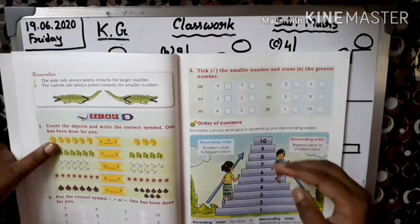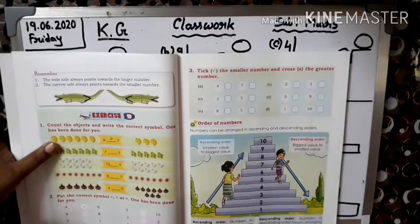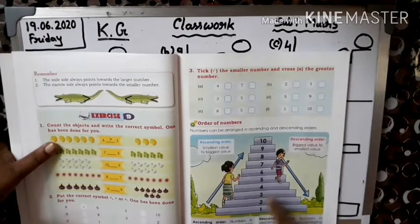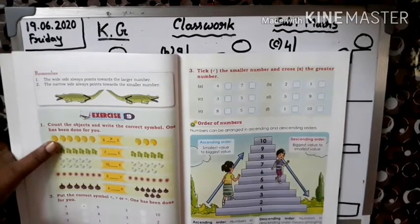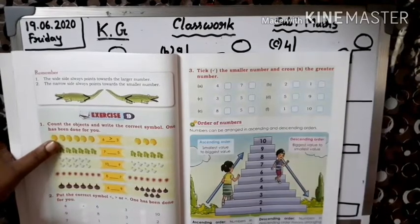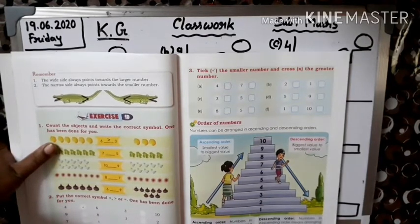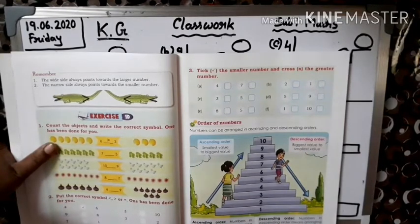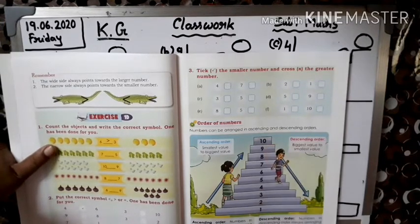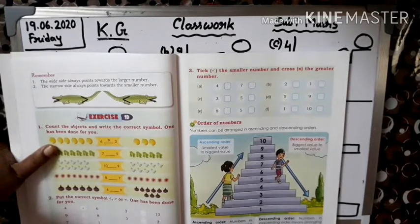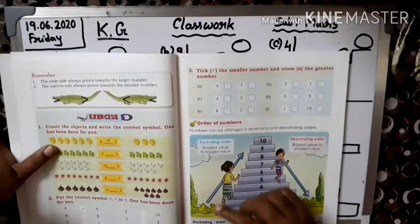Dekho bachyo, numbers jab dekhna hai - agar hum log top floor me hai, ten floor me hai, aur niche utarna hai first floor me, toh kaise samajhna hai? Ten, eight, five, four. Starting ho raha hai biggest number se, aur niche utar raha smallest number se. Hum logo ko dhyan mein rakhna hai: ascending order means smallest number se start hota hai. Jab bhi dekho, smallest number se shuru karo. Descending order kabhi bhi shuru karoge, toh big number se shuru karo, biggest number se.